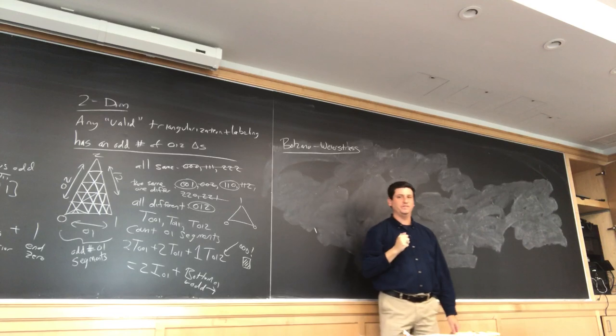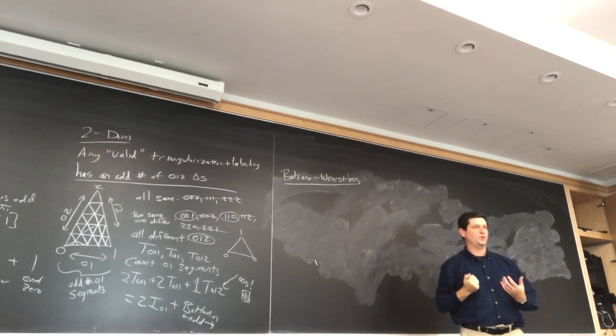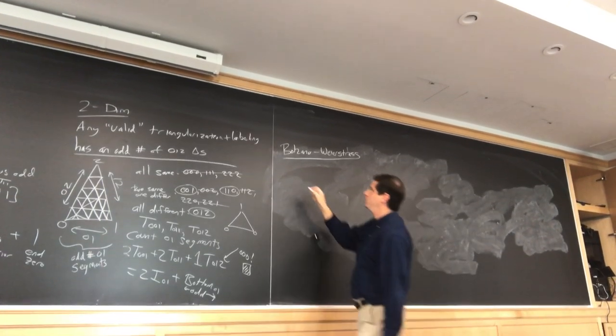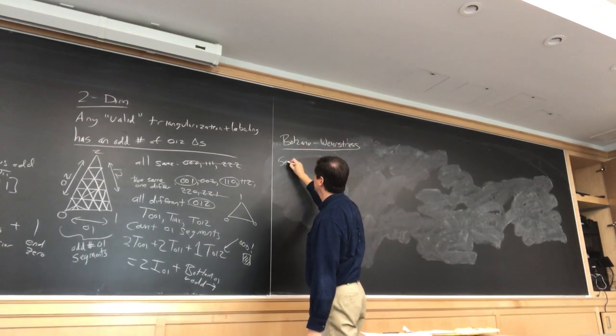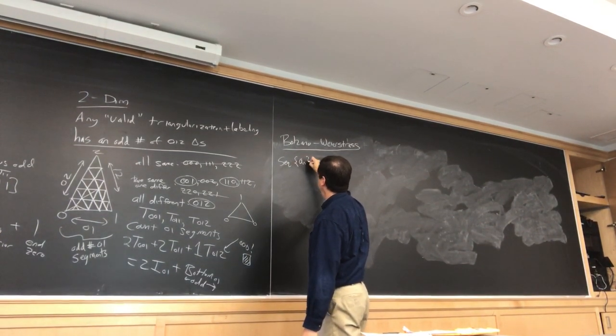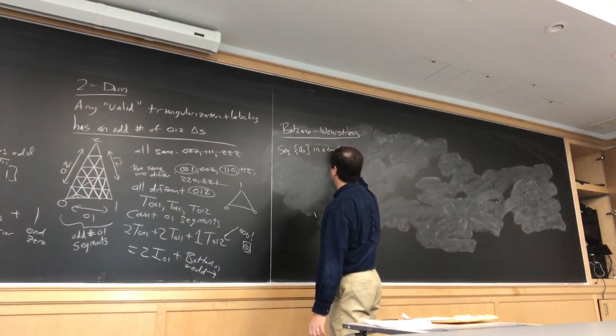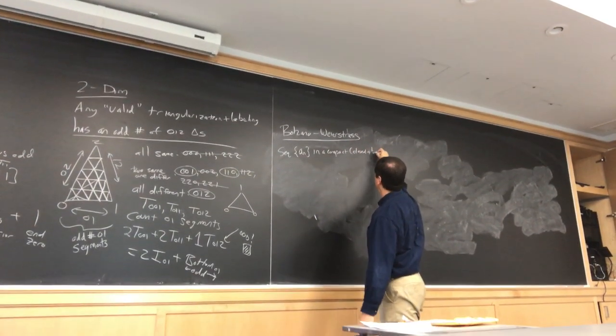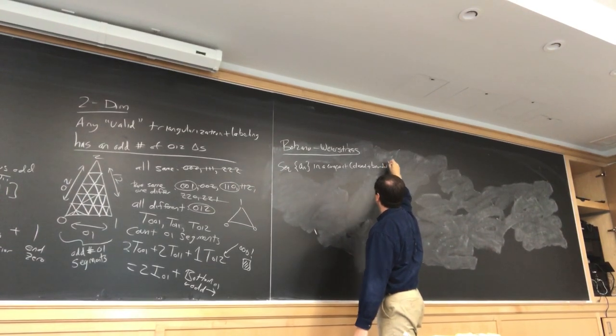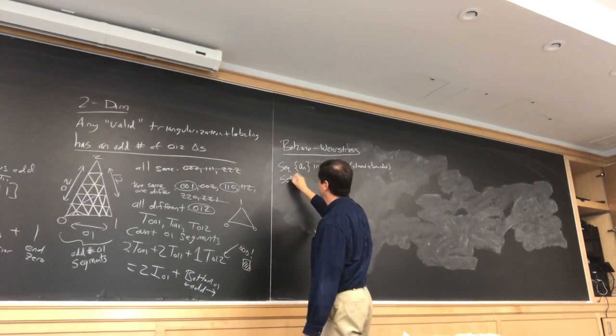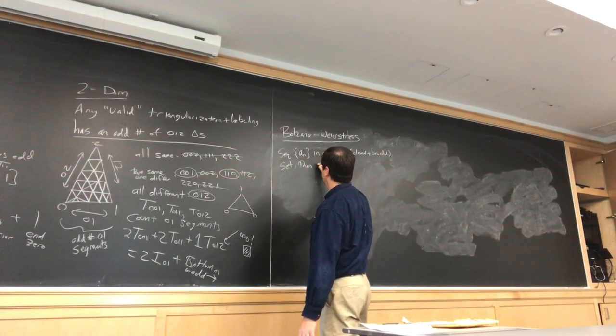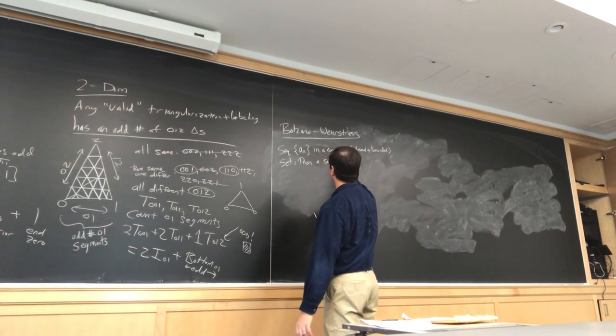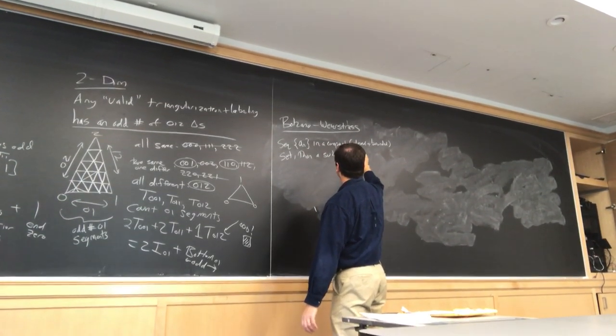Have you taken real analysis? I would have been extremely impressed if you had not taken real analysis. I just somehow said Bolzano-Weierstrass. I don't know too much about Bolzano, but Weierstrass has a lot of wonderful theorems in complex analysis. And the idea is the following. You have a sequence, a_n, in a compact, so that means closed and bounded, set, then a subsequence converges.